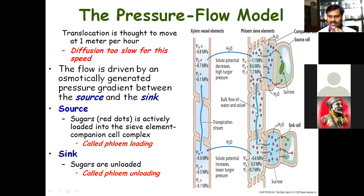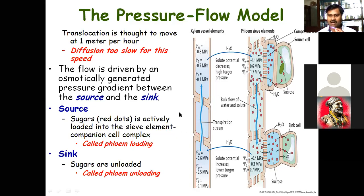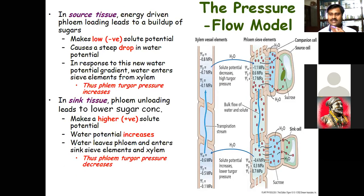Due to turgor pressure the food material flows to another cell; as food material increases, turgor pressure increases and this bulk flow moves to the next cell. Food material is transferred to the next tube element and where it is needed, it is transferred to the companion cell and then to the sink cell — whether in the stem, flowers, fruits, or roots. Most of the food moving here is not only glucose or sucrose.